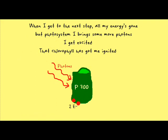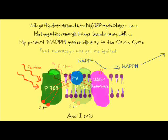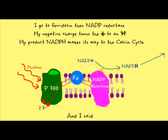When I get to the next step, all my energy's gone. But Photosystem 1 brings some more photons — I get excited. That chlorophyll has got me ignited. I go to Ferredoxin, then NADP reductase. My negative charge turns the plus to an H. The product NADPH makes its way to the Calvin cycle.